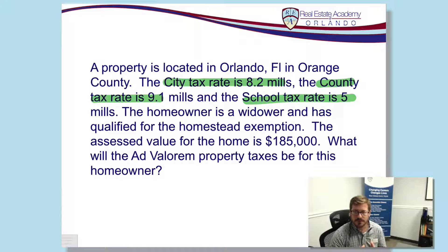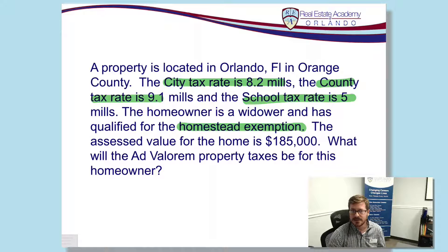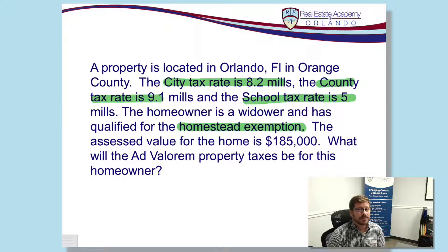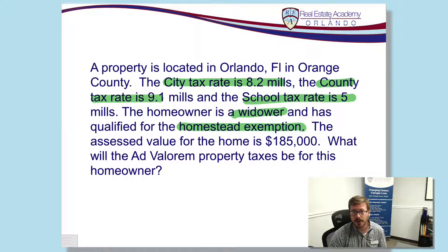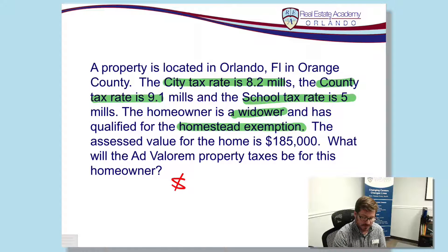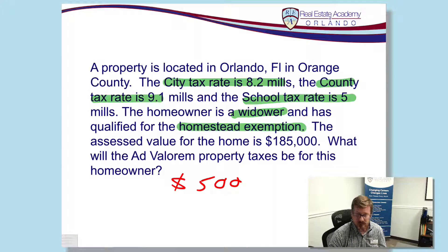Next, we know there's a homestead exemption here because they tell us the property owner does have a homestead exemption. That means this is a homeowner, this is their primary residence, and they have gone through and actually claimed this as their homestead property. That does give them some additional tax breaks. We also see that this is a widower. From our textbook, we know the widower will qualify for an additional $500 tax exemption, on top of their other exemptions — we'll need to include that in our final figures.